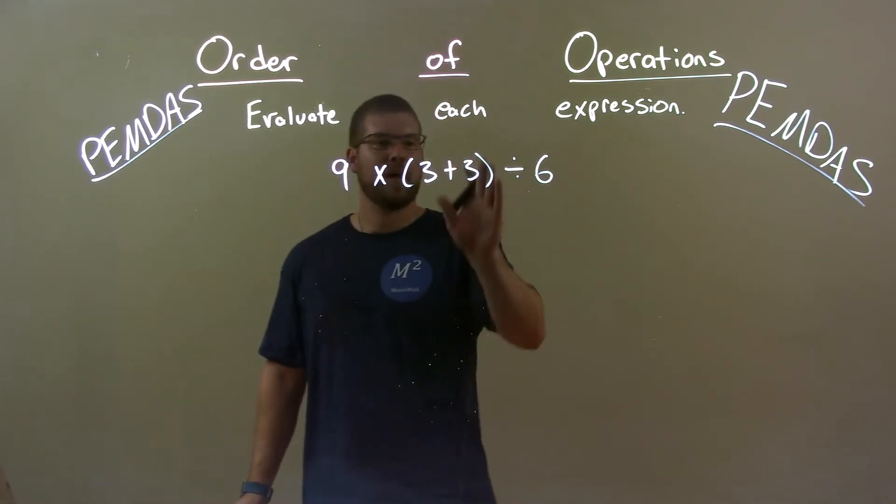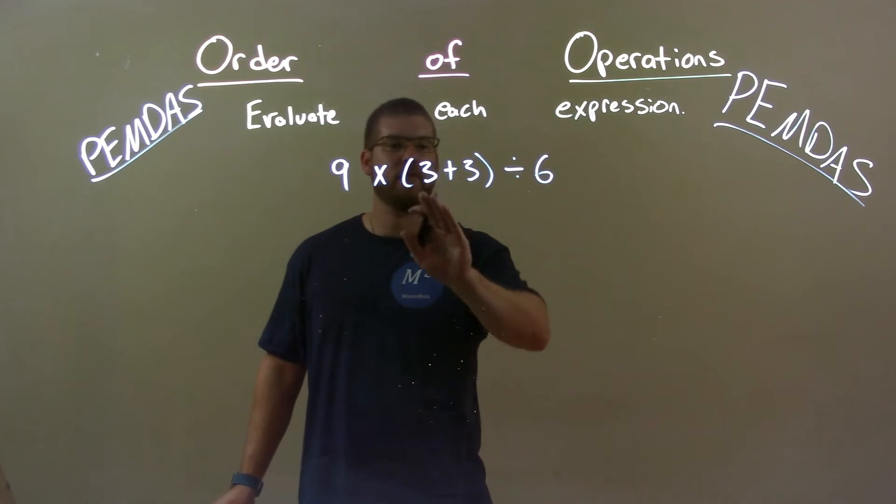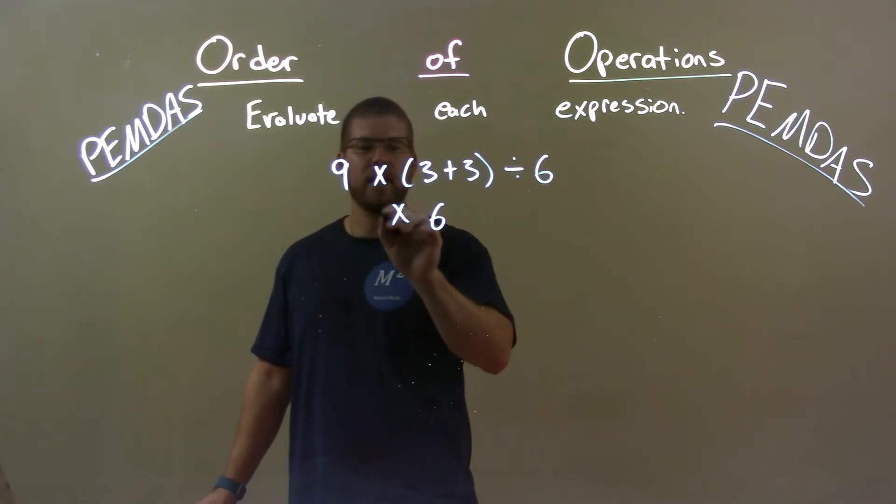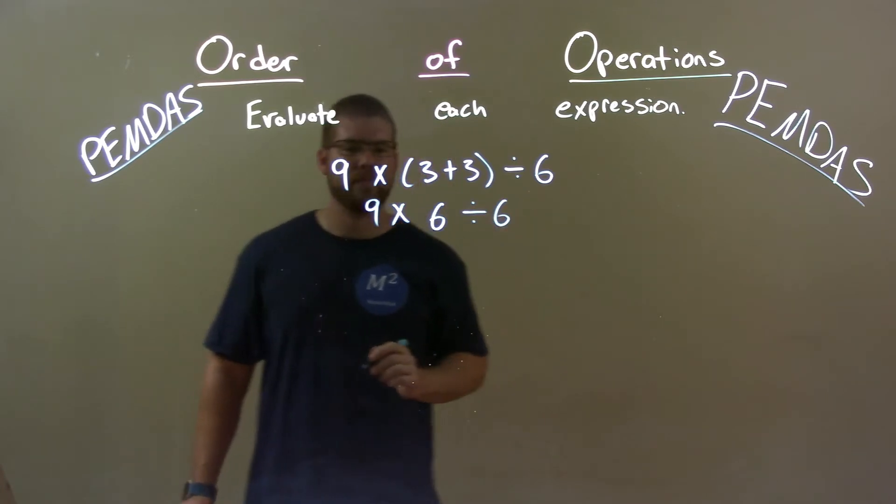Well the first step here is I have my parentheses. Inside it I have 3 plus 3. So 3 plus 3 comes out to be 6. So let's bring down the 9 and then divide it by 6.